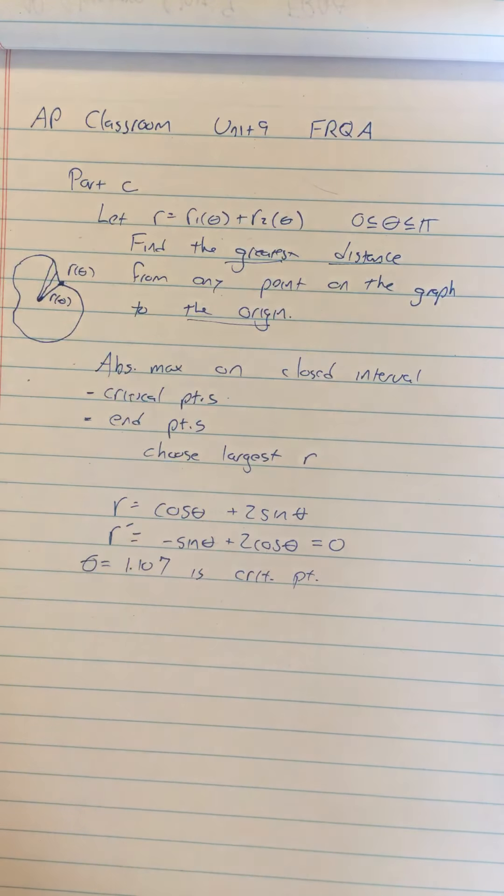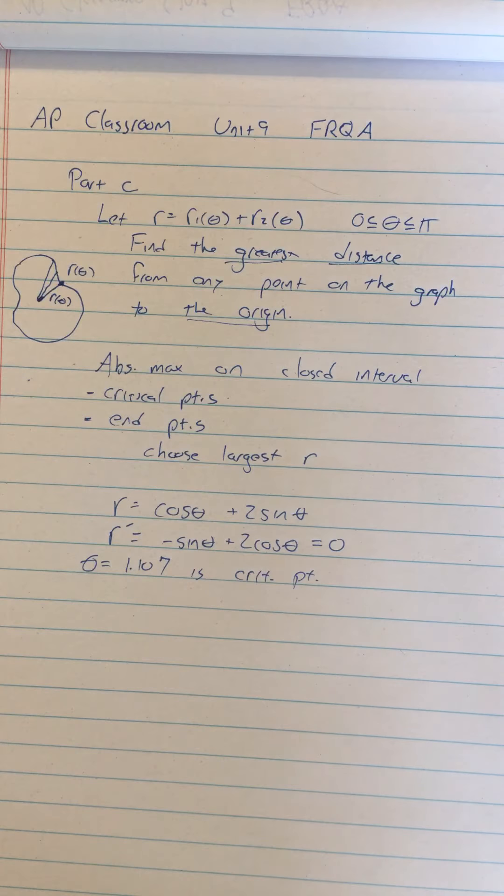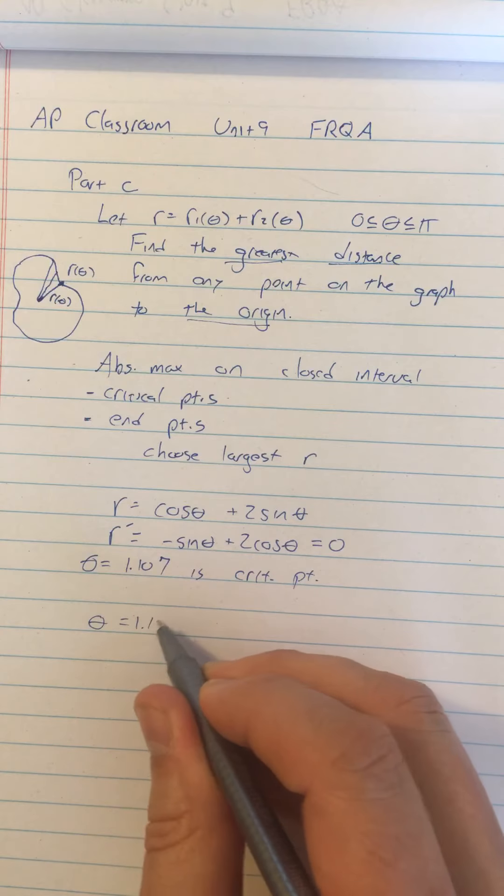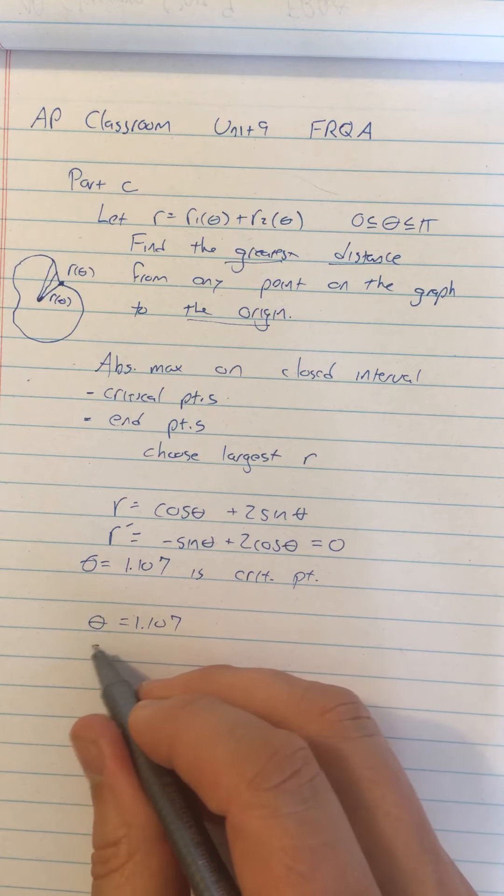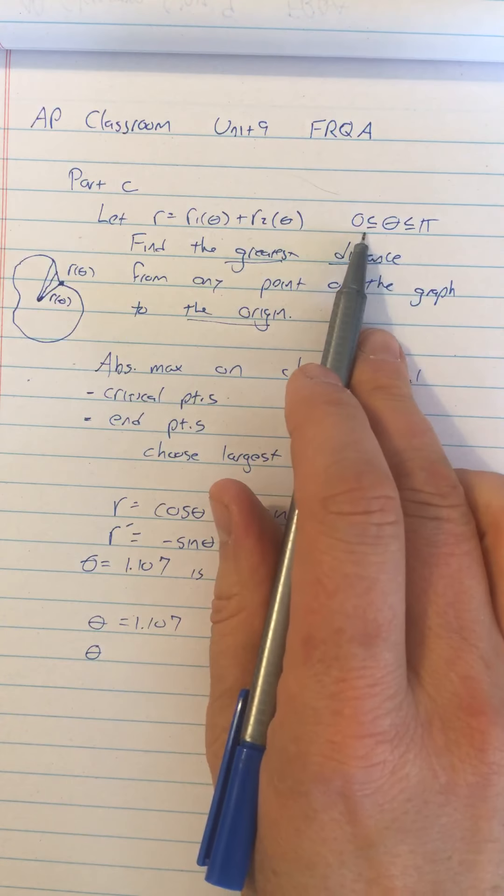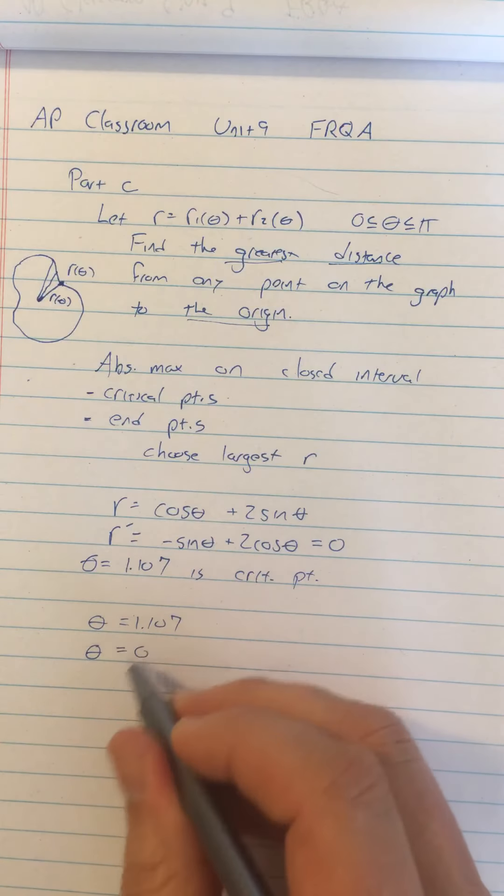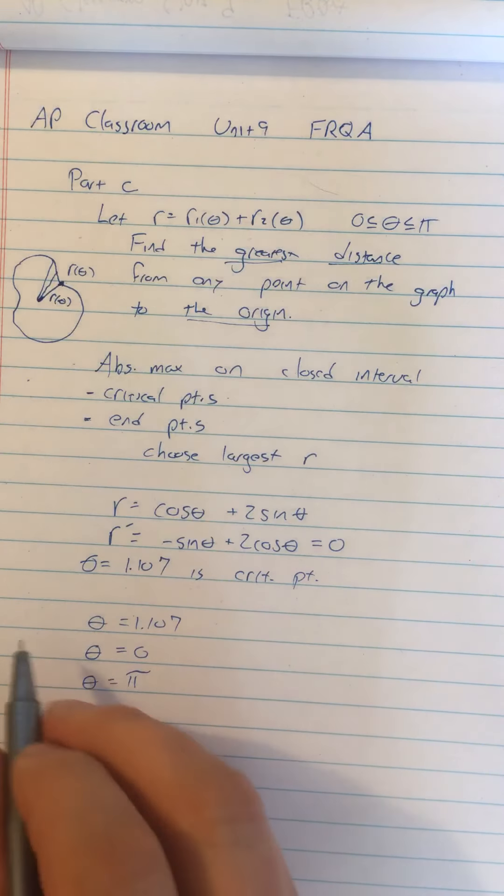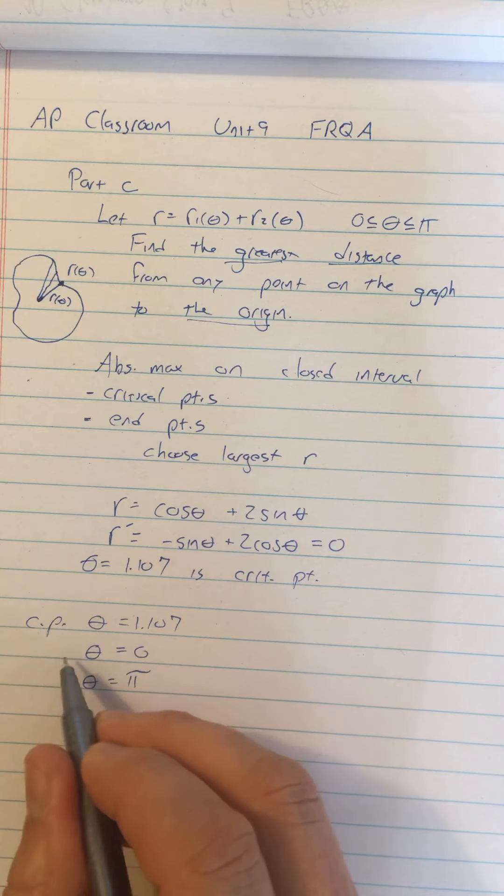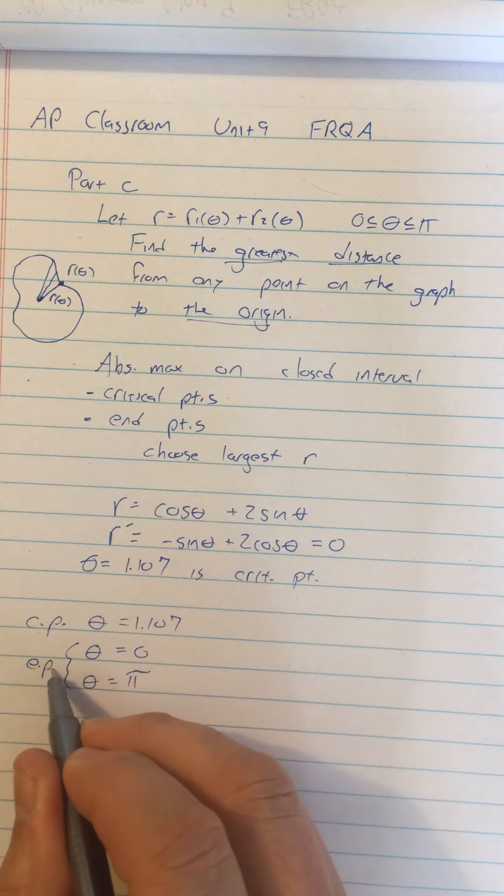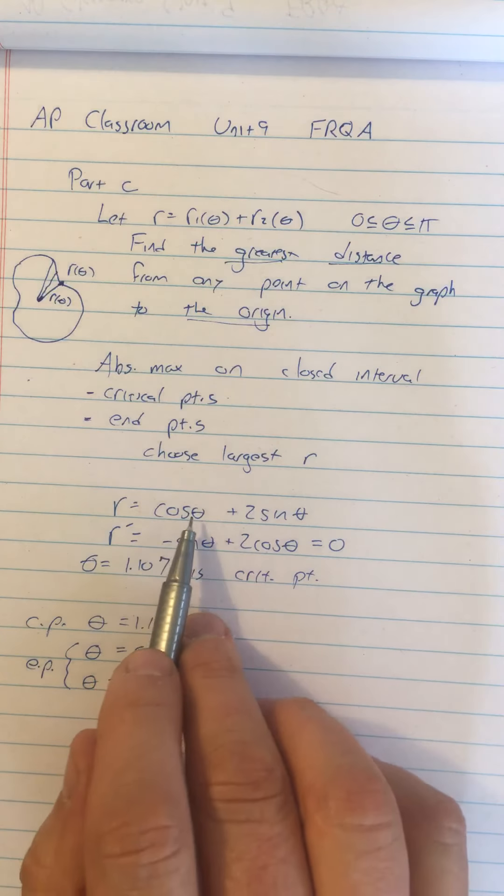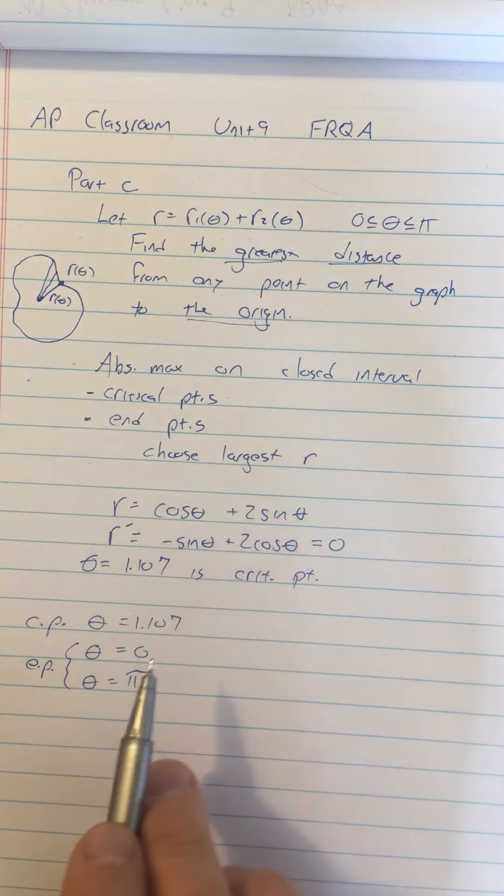But remember, you also have to check the endpoints. So what we really want to do is set up a table. A table of values of theta, 1.107. And our interval is bounded by zero and pi. So we'll look at theta equals zero and theta equals pi. You can organize these in different ways. I always like to put together the critical point and the endpoints. And maybe we would have more than one critical point. We could put in more than one critical point.